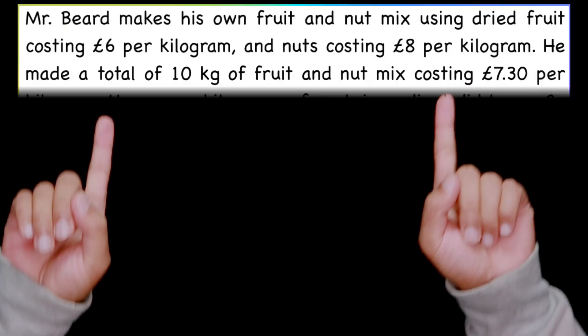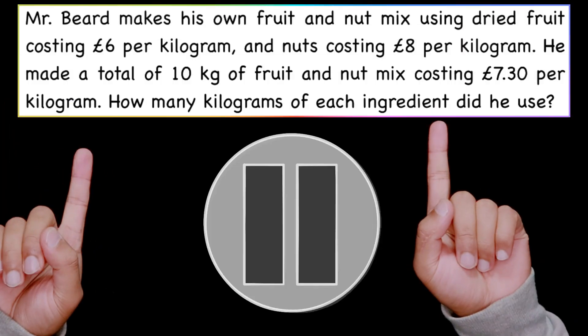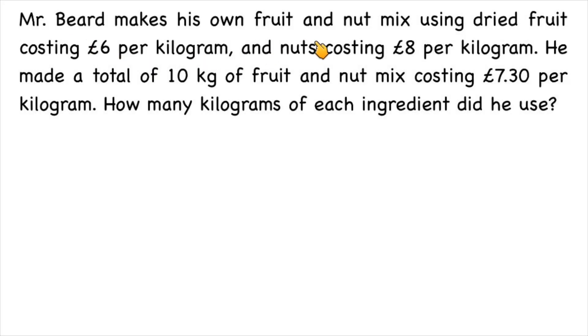Now since he told him that, he's run off — he's been avoiding him, hasn't been working out the equation. So why don't you guys work it out? Mr. Baird makes his own fruit and nut mix using dried fruit costing £6 per kg and nuts costing £8 per kg. He made a total of 10 kg of fruit and nut mix costing £7.30 per kg. How many kilograms of each ingredient did he use?